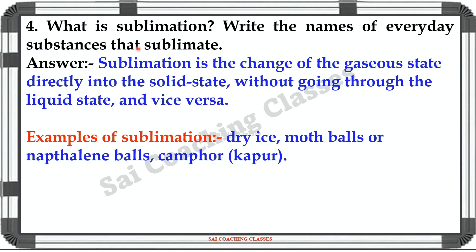Question number 4: What is sublimation? Write the name of everyday substances that sublimate. Answer: Sublimation is the change of solid state directly into the gaseous state without going through the liquid state and vice versa. Example: Dry ice, Moth ball or Naphthalene balls, Camphor means Kapoor, etc.